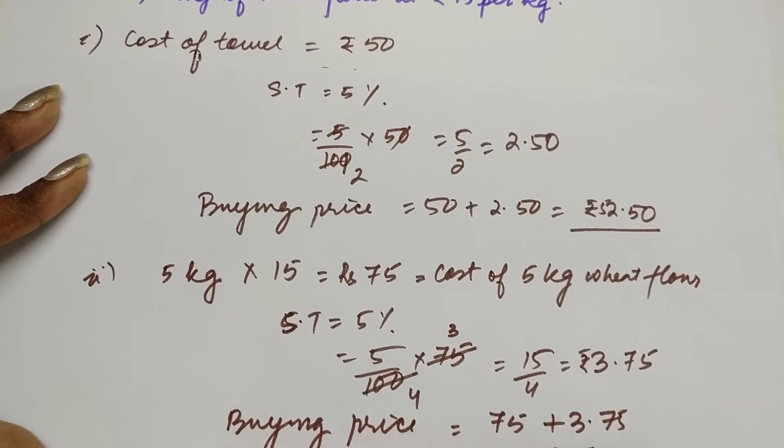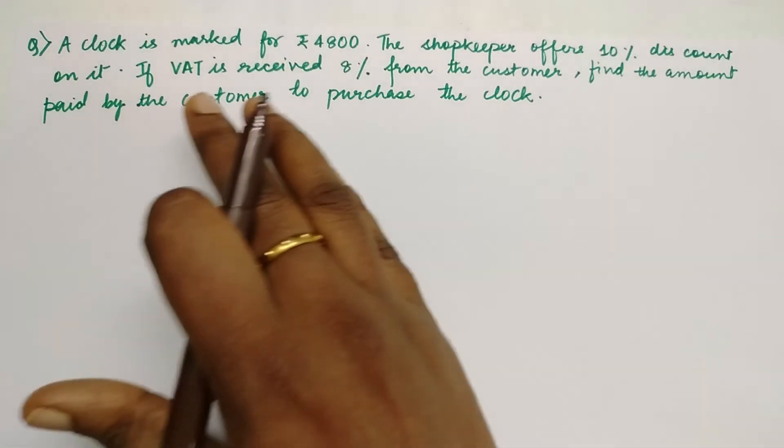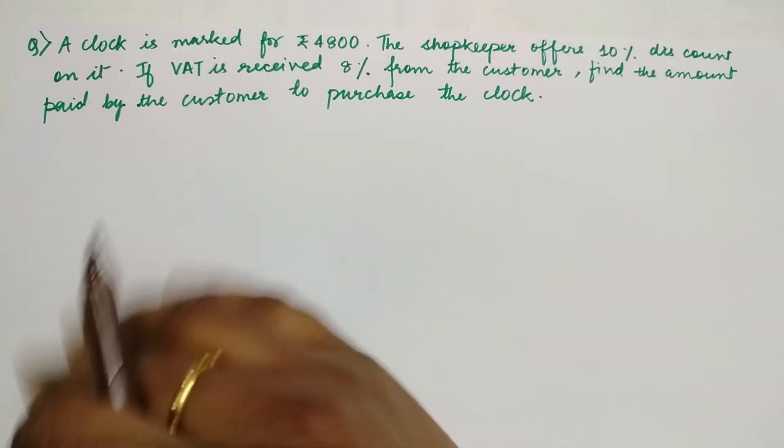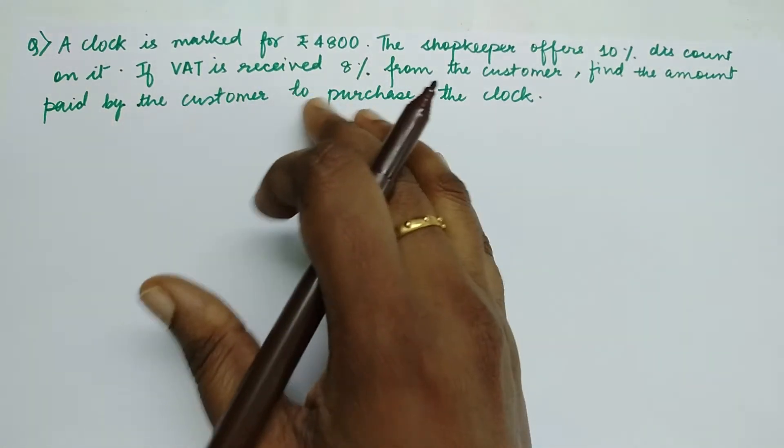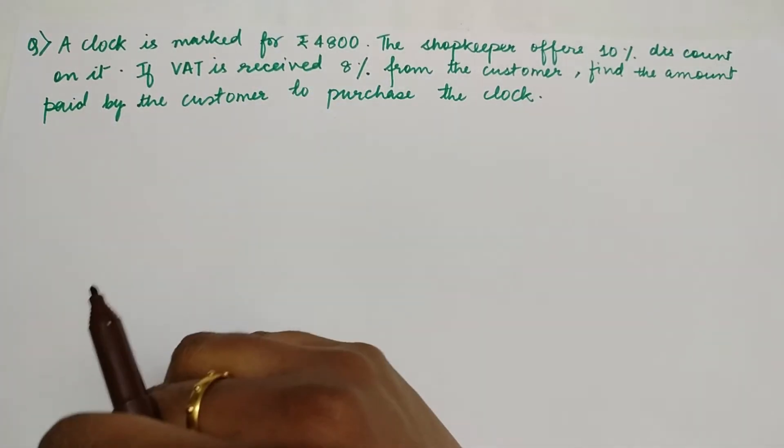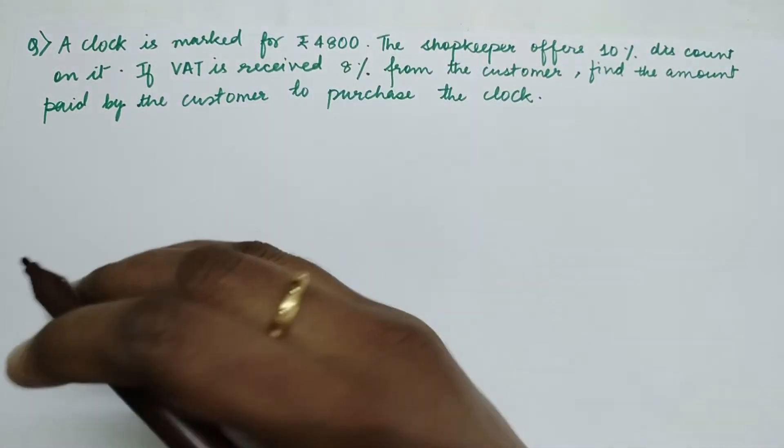Now in this question, the clock is marked for ₹4,800, so that's the marked price. The shopkeeper offers a discount of 10% on this, and VAT is received at 8% from the customer. Find the amount that he has to pay for the clock. When there is a discount, obviously the discount is subtracted from the marked price.